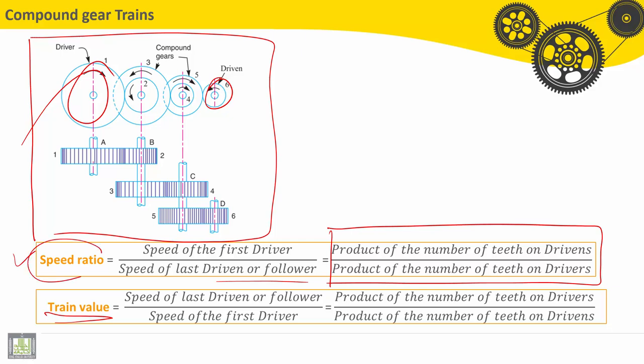So let's see here the speed ratio. Let's see here for this example: product of the number of teeth on the driven. So the driven here, driven gears are Number 6, Number 4, and Number 2. Then here we find Z2, Z4, Z6...